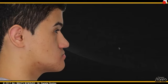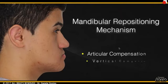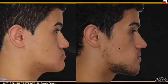What I'm going to show you is what I try to do now in my practice: mandibular repositioning mechanism for all my patients. I get a lot of facial asymmetries, gummy smiles, major class threes and major class two patients. Mandibular repositioning means doing an articular compensation, a vertical compensation, and a dental alveolar compensation. For that, I need to develop the alveolar bone, giving the patient a new vertical dimension and stability.